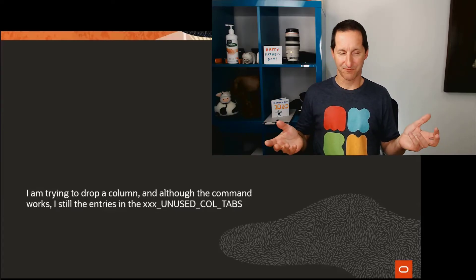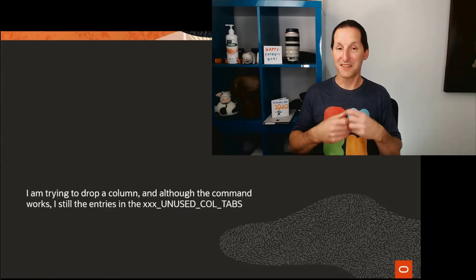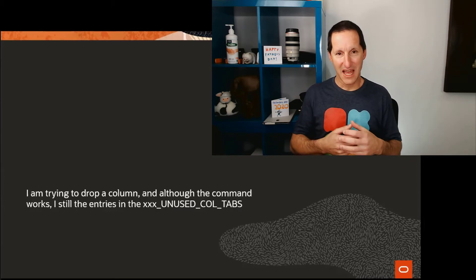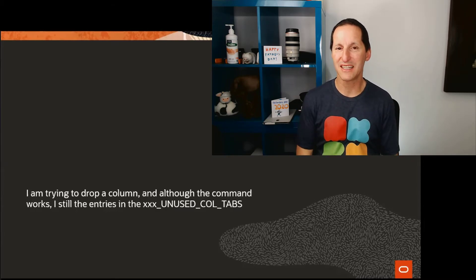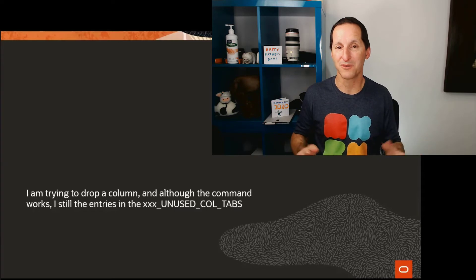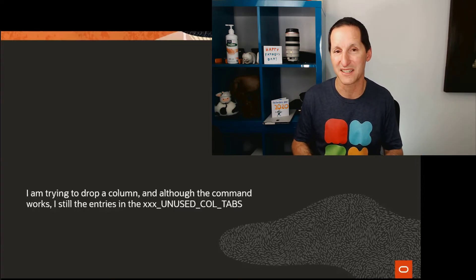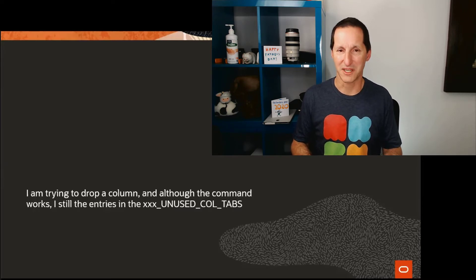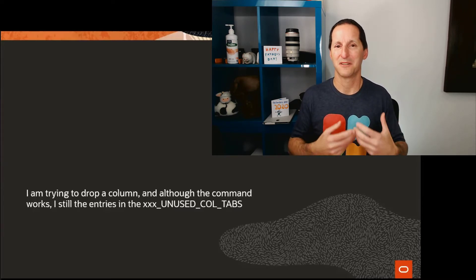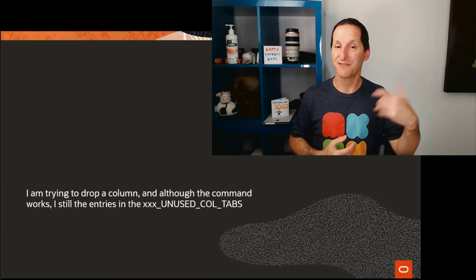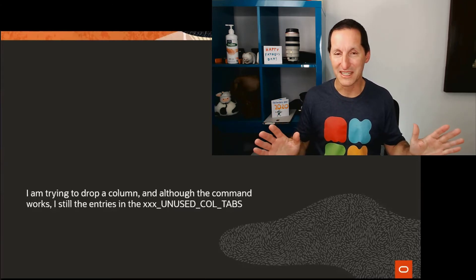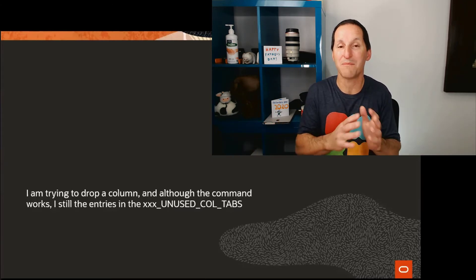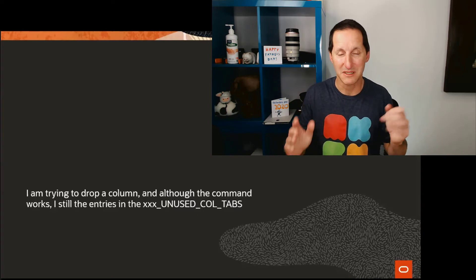I wanted to drop a column, and I did the drop column command, but when it was done, there were still entries in the unused tab cols view — the view that shows you what columns you have set to unused. That's a bit weird because in theory, the moment you do a drop column command after a set unused, everything's cleaned up. We wipe the table of that data, and the data is gone.